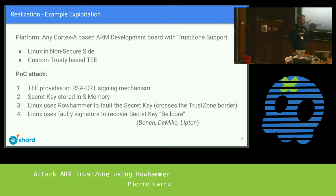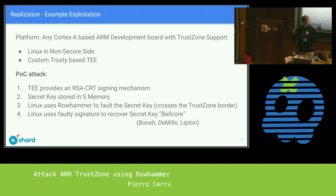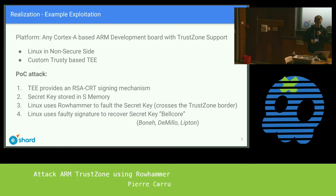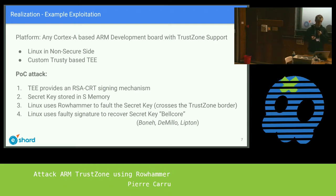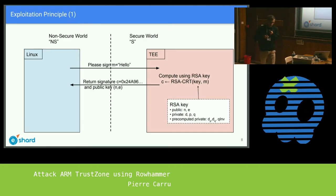This is the POC we made. We have a Linux system and a Trusted Execution Environment (TE) that provides a signature mechanism to the Linux side, which is quite common in smartphones — similar to the keymaster in Android. We'll use Rowhammer to fault some keys in the secure region of memory, and then retrieve private keys using a well-known crypto attack: the Bellcore attack.